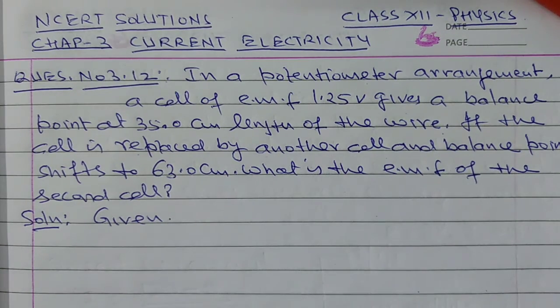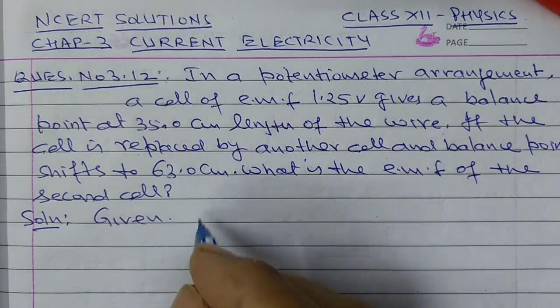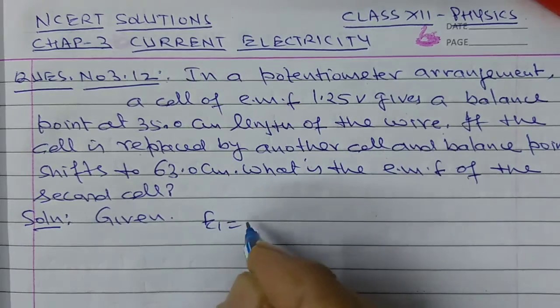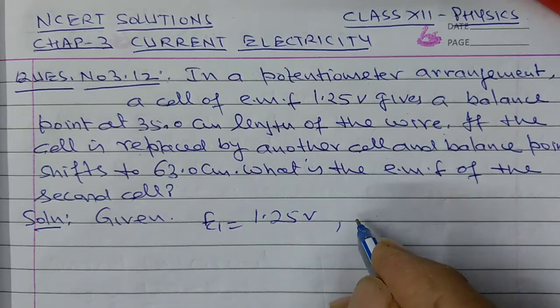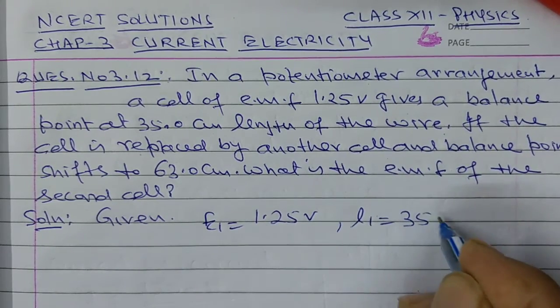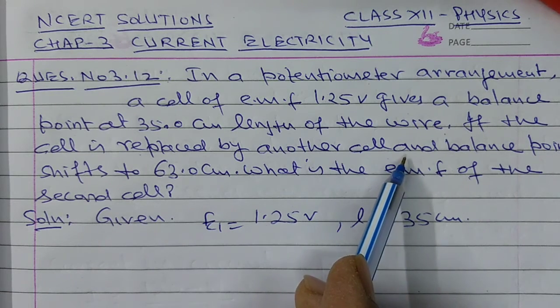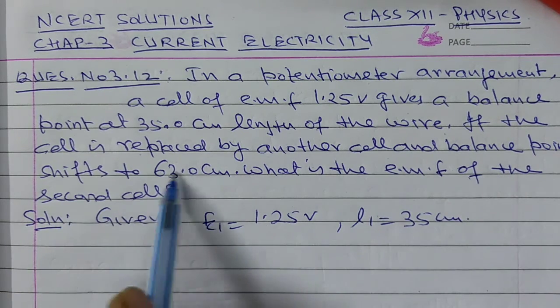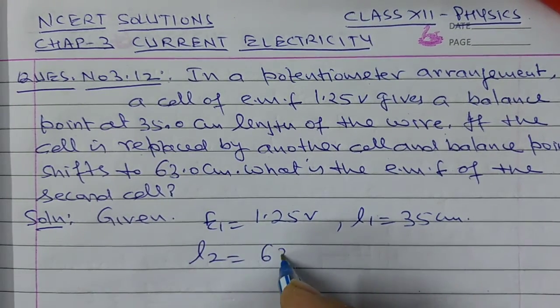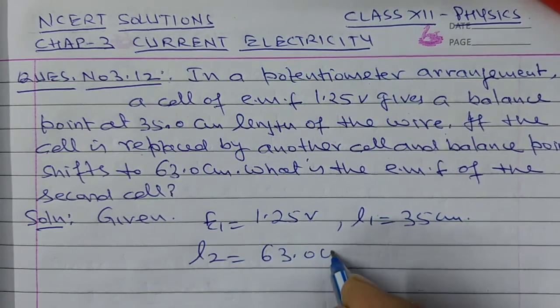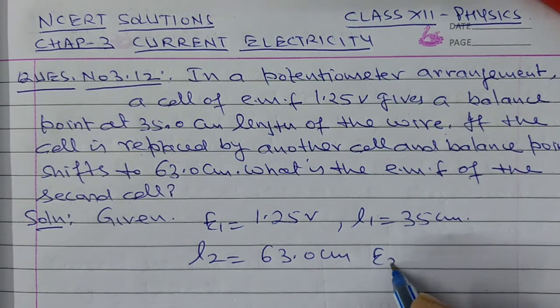In this question given that a cell of EMF 1.25 volt, that is E1 equals 1.25 volt. Balancing length L1 equals 35 cm. If the cell is replaced by another cell and the balance point shifts to 63 cm, that is L2 equals 63 cm. Then what is the EMF of the second cell? We have to calculate E2.